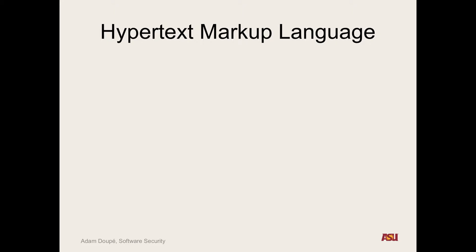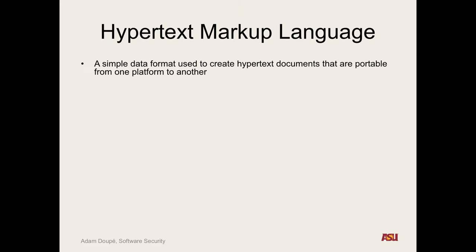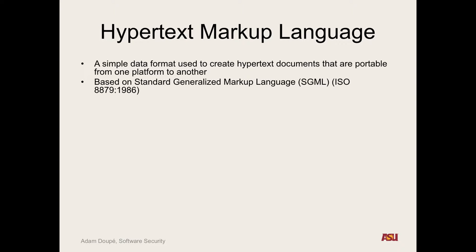The last technology we need to talk about is Hypertext Markup Language. It's a simple data format — simple in the sense that it's human readable. On any web page you can right-click, view source, and you'll be able to see the HTML of that page. The key point is that we can have HTML documents defined such that these hypertext documents, when interpreted by your phone, your computer, your laptop, or a giant supercomputer, are still parsed and represented the same. HTML is based on SGML, which was a prior standard from 1986.